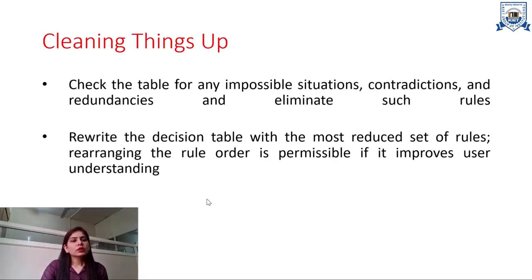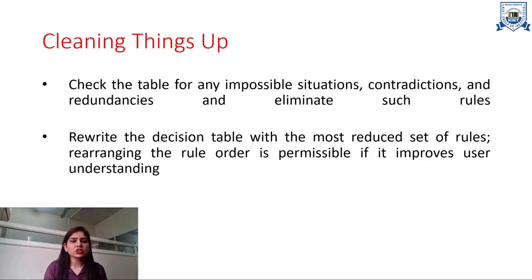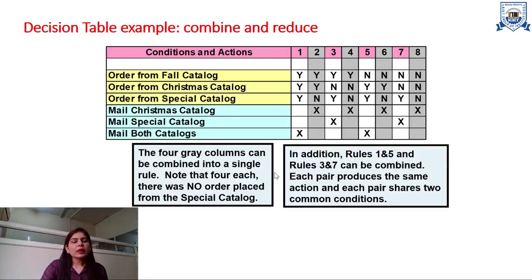After building the table, we clean it up by checking for any impossible situations, contradictions, and redundancies, and eliminating such rules. We then rewrite the decision table with the most reduced set of rules. Rearranging the rule order is permissible if it improves user understanding. We need to refine our decision table, removing all redundancies, contradictions, and impossible values to make it as simple as possible.